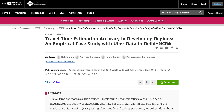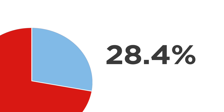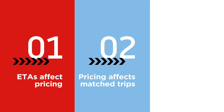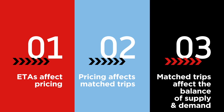Take a look at the study in New Delhi that looks at customer behavior when using a ride-hailing service. 28.4% of rides were canceled because of poor ETAs — that's more than a quarter of customers and revenue lost. At the end of the day, we've learned that ETA directly affects pricing, pricing affects which drivers you end up matching to which customers, and that matching impacts the balance of supply and demand when you're trying to fully optimize your company.